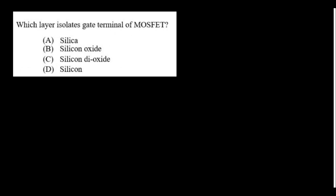The layer that isolates the gate terminal of a MOSFET is silicon oxide.